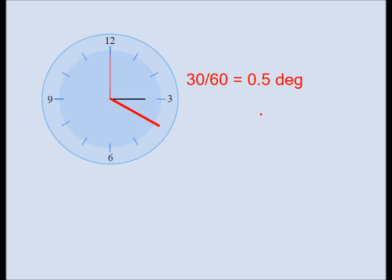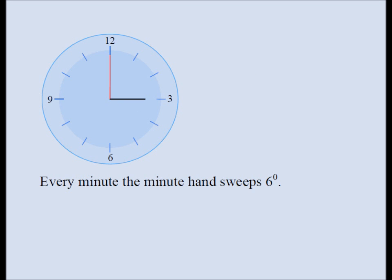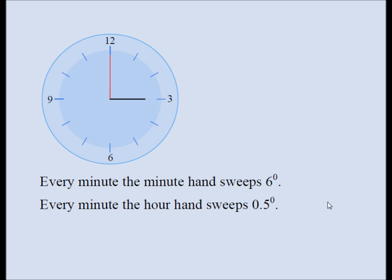Those are the two facts we need to keep straight. Every minute the minute hand sweeps an angle of 6 degrees, and every minute the hour hand sweeps an angle of 0.5 degrees. These two facts will help us find the angle between the hands of an analog clock at any given time.